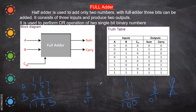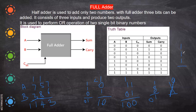A is zero, B is one, carry-in is one: zero plus one is one, one plus one is zero, so sum is zero and carry is one. A is one, B is one, carry-in is zero: one plus one is zero so sum is zero and carry is one. A is one, B is one, carry-in is one: one plus one plus one gives one and carry is one. That is what we see in the truth table.